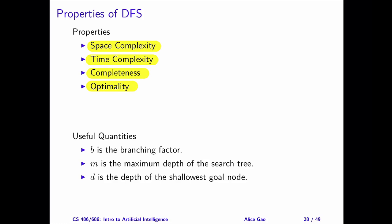When characterizing the complexities, I will make use of three quantities. B is the branching factor, or the maximum number of successors or neighbors that any node has. Intuitively, B determines how fat or how wide the search tree is.